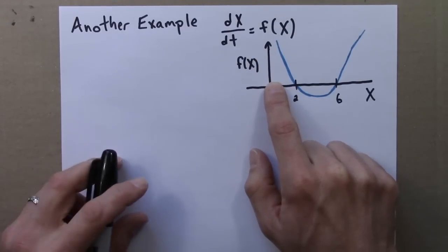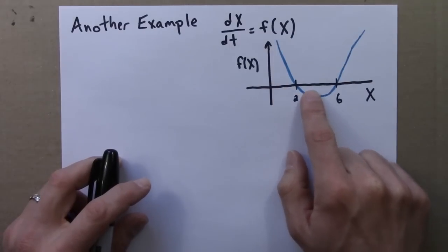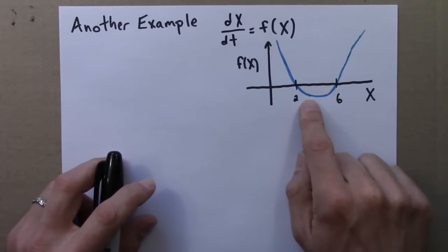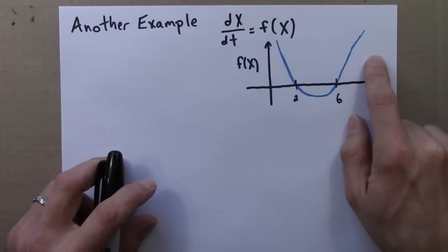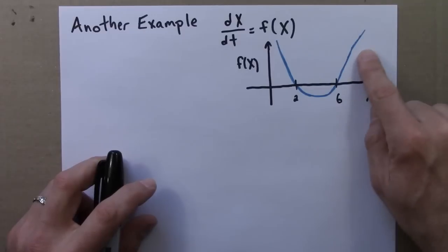Then x is increasing. Between 2 and 6, x decreases. The blue curve is negative. The derivative is negative. Greater than 6, x increases again because the derivative is positive. The blue curve is above the x-axis.